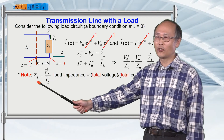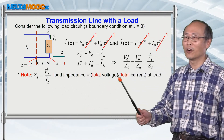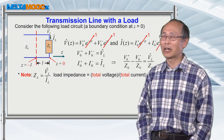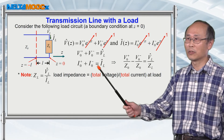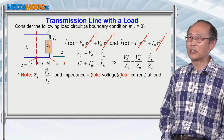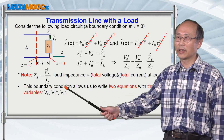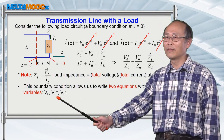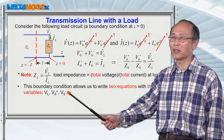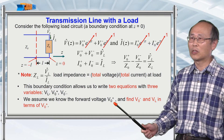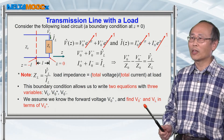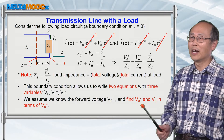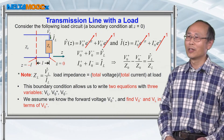The load impedance is defined as the total voltage over total current — a different definition from the characteristic impedance. The boundary condition allows us to write two equations with three variables: VL, V0-plus, and V0-minus. This means that if we assume we know the signal sent in the forward direction, we can always find the reflected signal and also the signal delivered to the load as a function of the forward signal. So let's do the calculation.